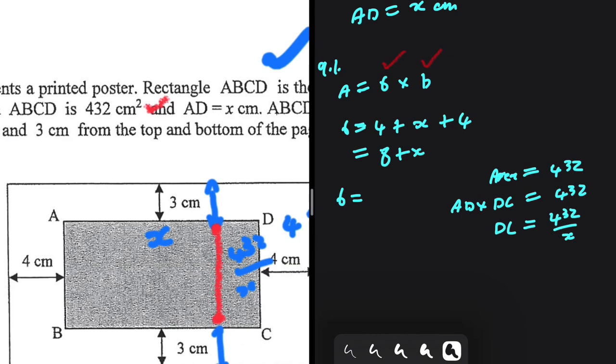So the length of the poster is 432 divided by x plus 3 plus 3. These 3 right here from D to the poster and this 3 from C to the poster plus 432 divided by x which is the length of DC. So the breadth will be equal to 432 over x plus 6. This is the length and this is the breadth.